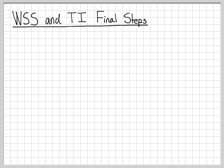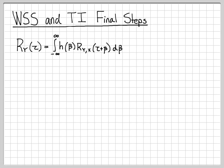If we consider both wide-sense stationary random input processes and time-invariant systems simultaneously, here are the final steps we need to do. Recall we had this expression from the last video: the autocorrelation function of the output random process R_y(τ) equals this integral expression. The cross-correlation between y(t) and x(t) — when we have a wide-sense stationary input in a time-invariant system — can be written as a simple convolution.